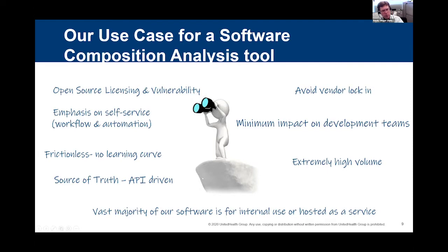Our use case required open source licensing and vulnerability analysis and management — something that users could use themselves, API-driven so people could integrate it into their processes in new and innovative ways. We needed extremely high volume capability; we have thousands of projects to analyze. The vast majority of our development is for internal use — managing people's workflows or customer-facing portals — with a fairly high number of concurrent users, so it's important for things to scale.